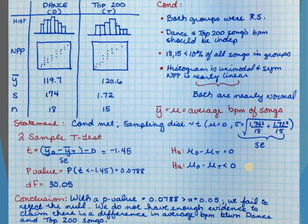Comment on it. I like doing it this way because everything is labeled — I don't need to go searching. Both are nearly normal. I've identified my statistic. I'm talking about the average beats per minute of songs. If you just put 'BPM of songs,' you've lost some points, because we're looking at the sample, not the individual. So we've got our sampling distribution — make sure you wrote T and not N. T distribution centered at zero for the hypothesis test. Your formula for standard error — make sure you got those little squares in the right places.